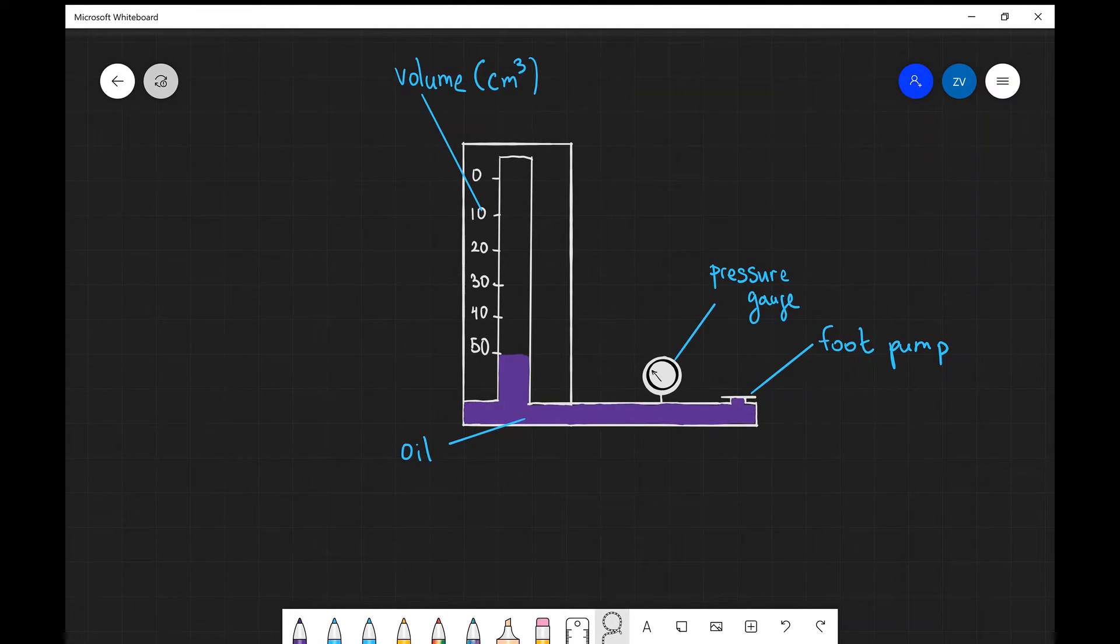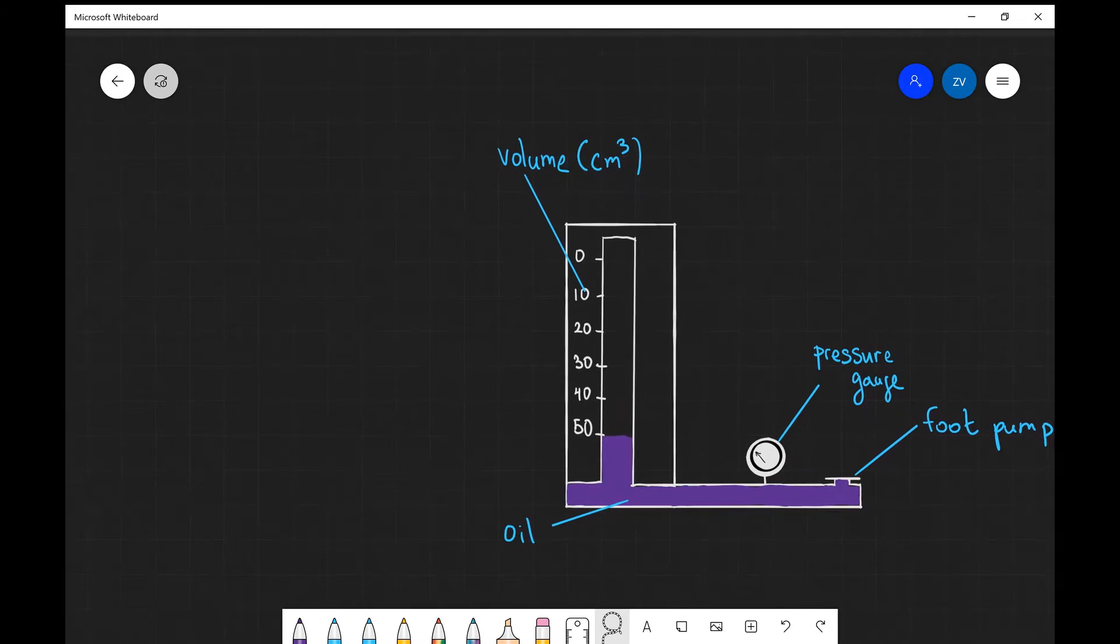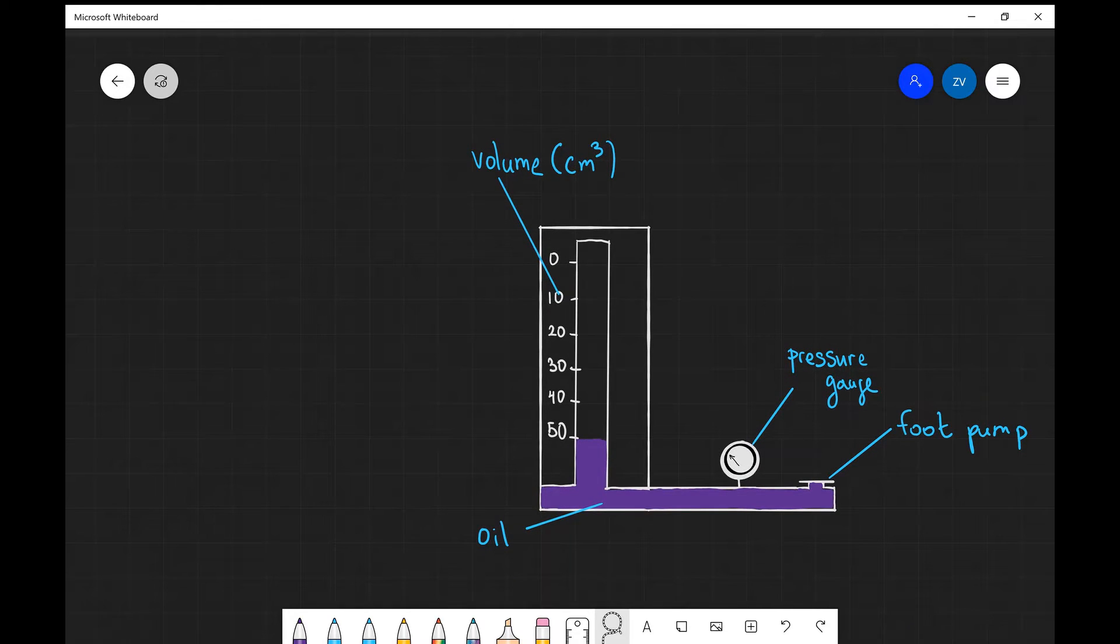For our experimental setup we have two things to measure: one is the volume, the other is the pressure. Our first step in performing this experiment would be to slowly increase the pressure. Let's write this down. Step one would be to slowly increase the pressure.